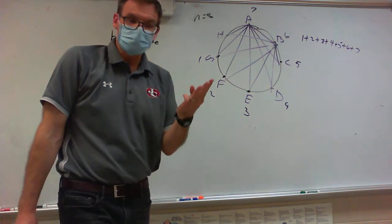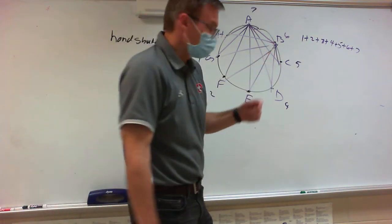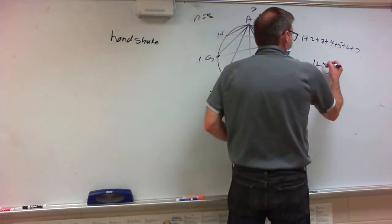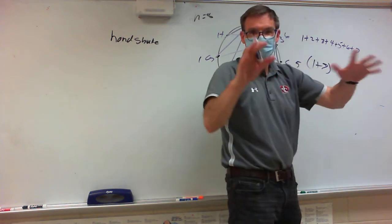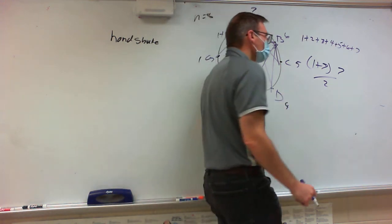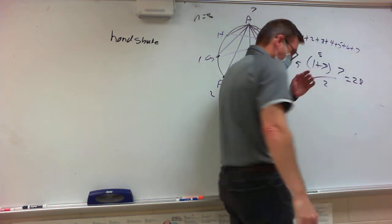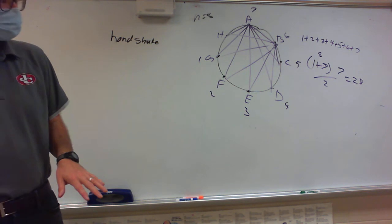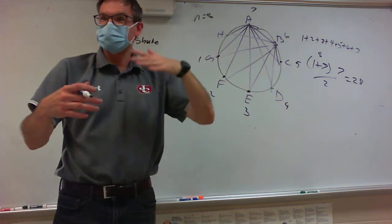In an arithmetic series, you need three pieces of information: the first term, the last term, and the number of terms. The first term is 1, the last term is 7, and the total number of terms is 7. Using the formula, that's 7 over 2 times the sum of first and last... working it out gives us 28 total handshakes. This connects to something we did last week.